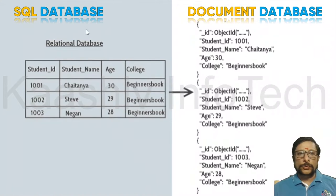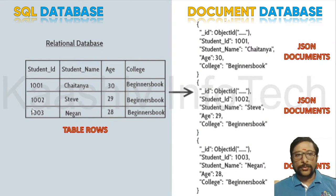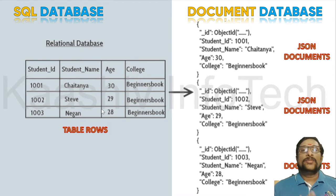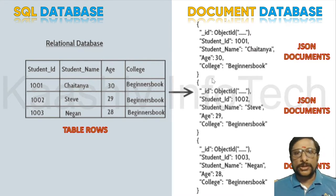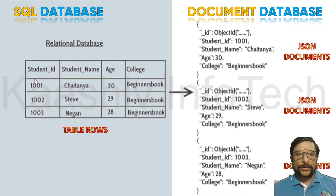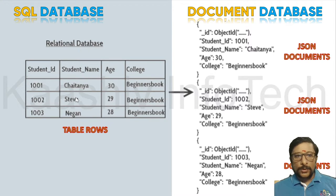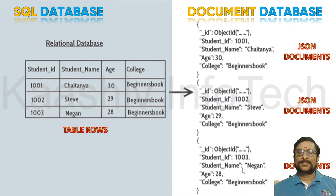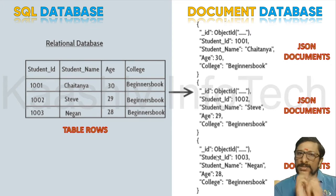In the table format you got rows and columns, whereas in unstructured data they create it as a JSON document — JavaScript Object Notation document. You are able to see the JSON documents here. Every row will have an object ID, a unique ID. You got the student ID, the student name, the age, the college — and this is repeated per document. Instead of a table with rows and columns, you have a simple string. That is why document database is really famous.